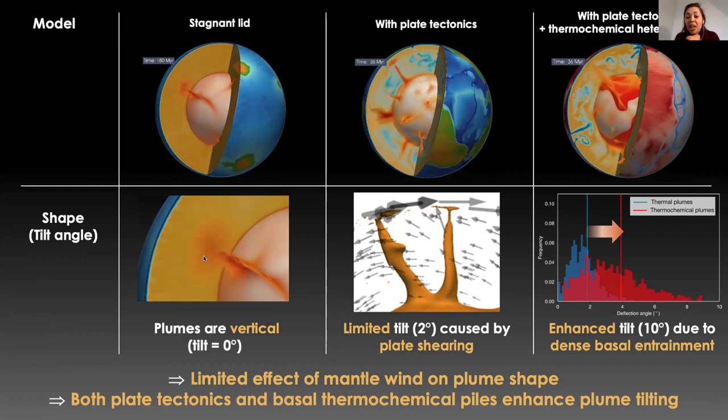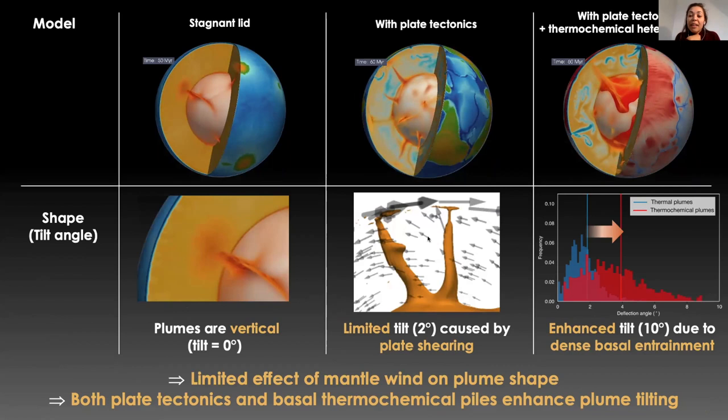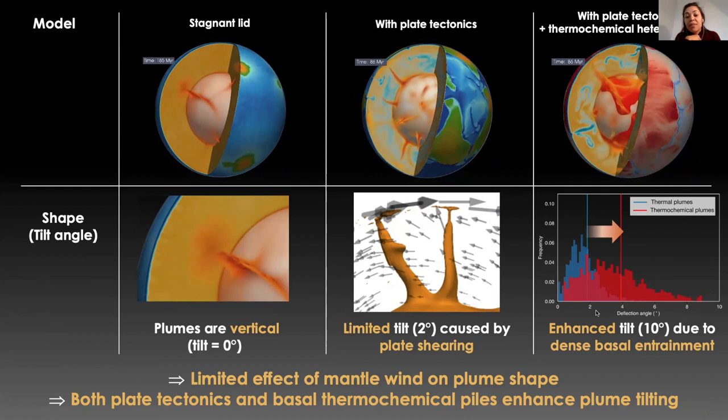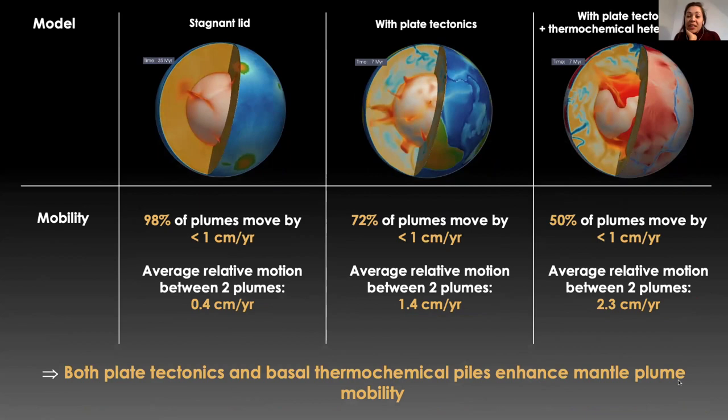We also tracked the vertical deflection of model plumes and found a limited effect of mantle wind on plume shape. Moreover, when comparing all these models, we found out that both plate tectonics and to an even greater extent basal thermochemical piles favor plume tilting.